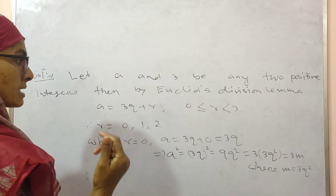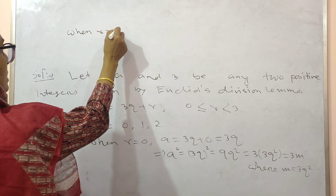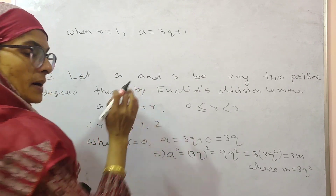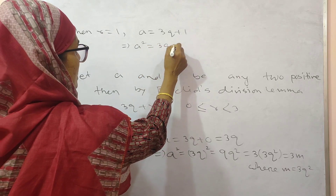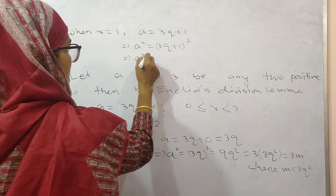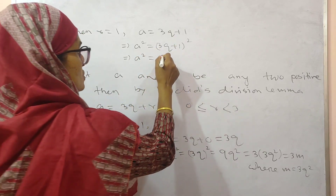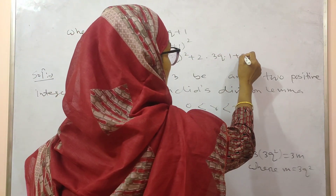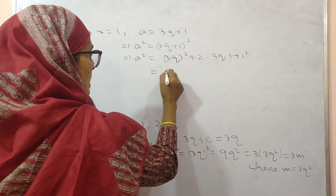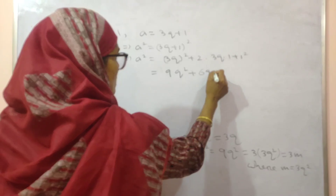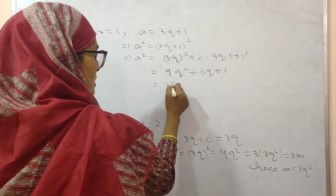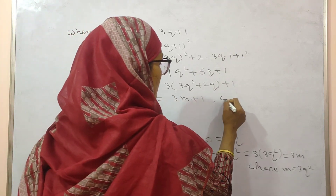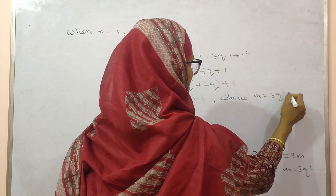Next, when r equal to 1, A equals 3q plus 1. Squaring both sides, A squared equals (3q plus 1) whole square. Using the identity (A plus B) squared equals A squared plus 2AB plus B squared, you get 9q squared plus 2 into 3q into 1 plus 1 squared, which equals 9q squared plus 6q plus 1. Taking out 3 as common factor: 3(3q squared plus 2q) plus 1, which is of the form 3M plus 1, where M equals 3q squared plus 2q.